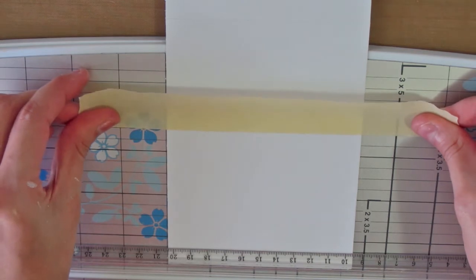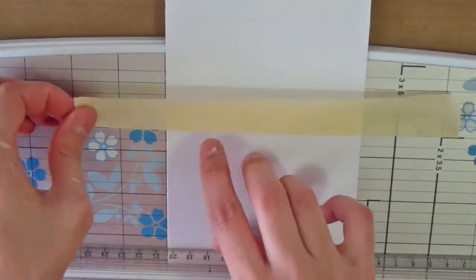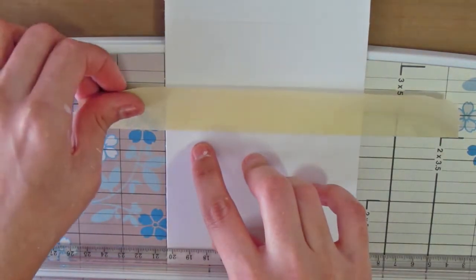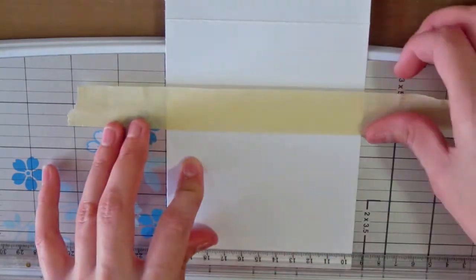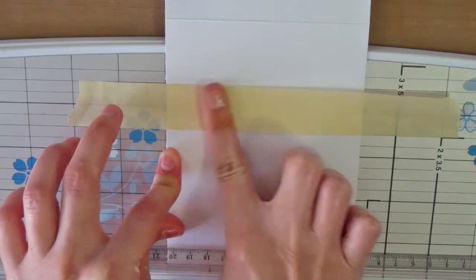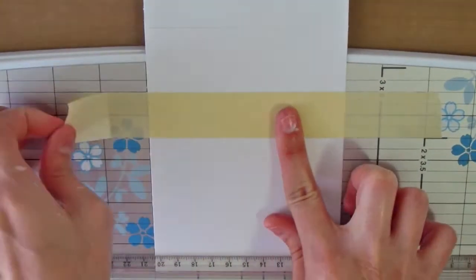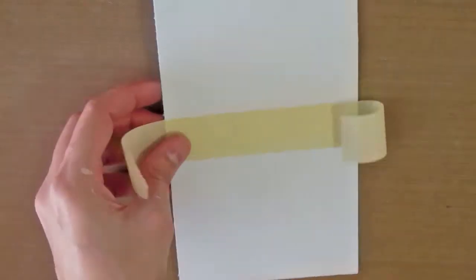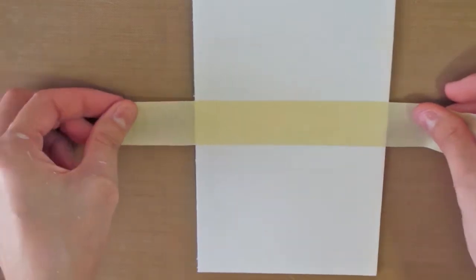Now that I have clarified that, I'm using some masking tape to mask the area where I'm going to stamp my sentiment. I'm using the line on my paper trimmer to align it. I will also mask the back of my card base to make sure I do not get any stamping there.